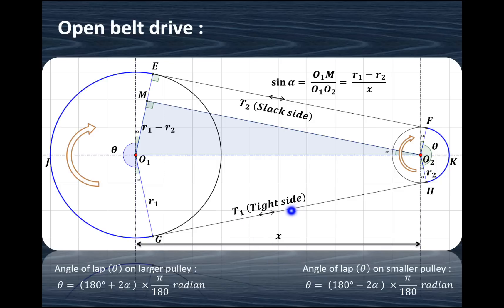The belt is pulled on one side and released at the top, therefore this side is known as the tight side, whereas this side is known as the slack side. As the belt is pulled on this side, it is in tension; where it is released on this side, it is in compression. So there is alternate tension and compression produced in the belt drive, and that phenomenon is known as creep in the belt drive.